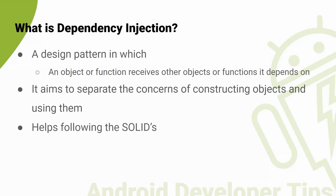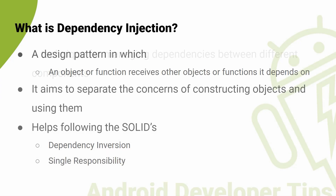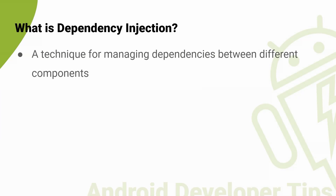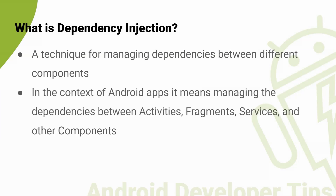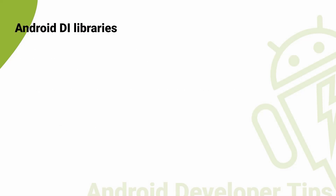This helps you to follow the SOLID dependency inversion and single responsibility principles. At its core, dependency injection is a technique for managing dependencies between different components in an application. In the context of Android development, this means managing dependencies between activities, fragments, services, and other components that make up your app. Some of the most common Android DI libraries are Dagger and Hilt, which is built on top of Dagger and aims to reduce the boilerplate code required for Dagger and make dependency injection less painful for Android apps.